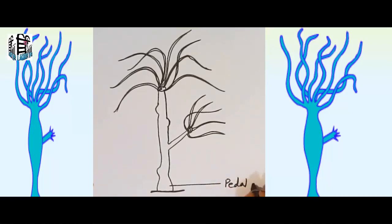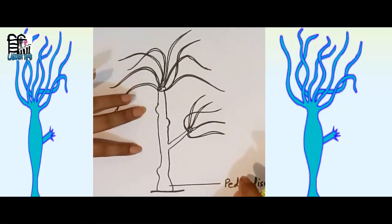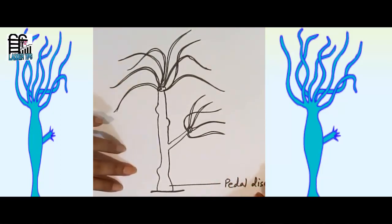Pedal disk: actually the proximal or aboral end of Hydra drawn out into a disk-shaped slender stalk called basal disc or pedal disk. So this is actually pedal disk, then hypostome. So if I divide Hydra into three parts...